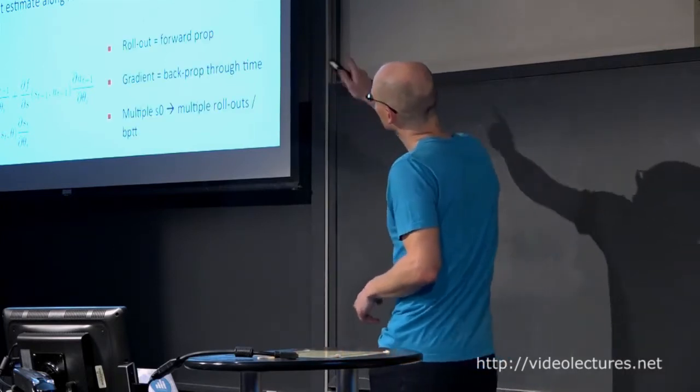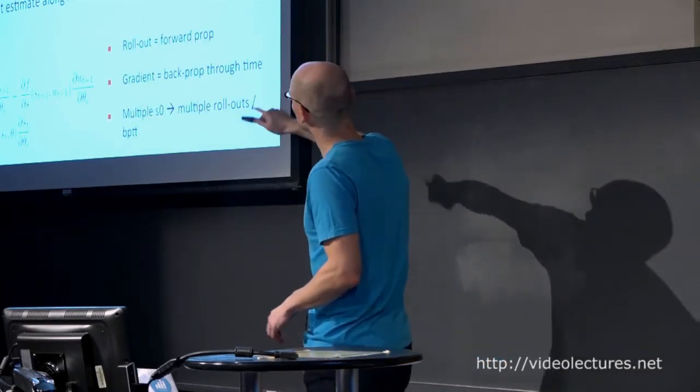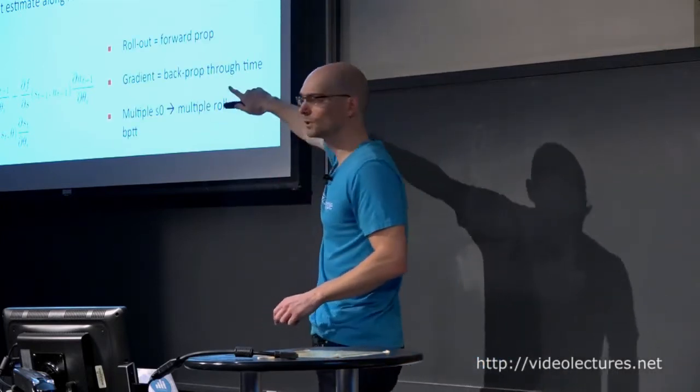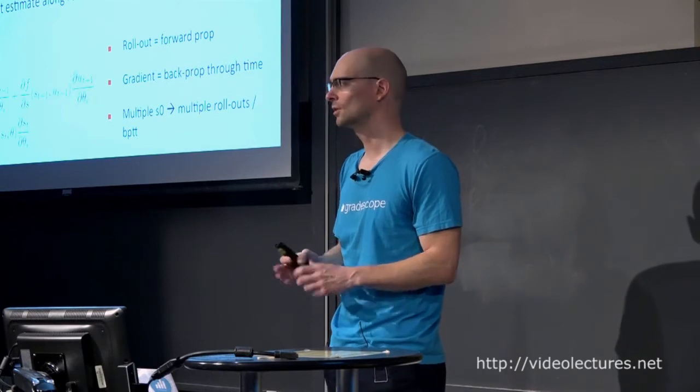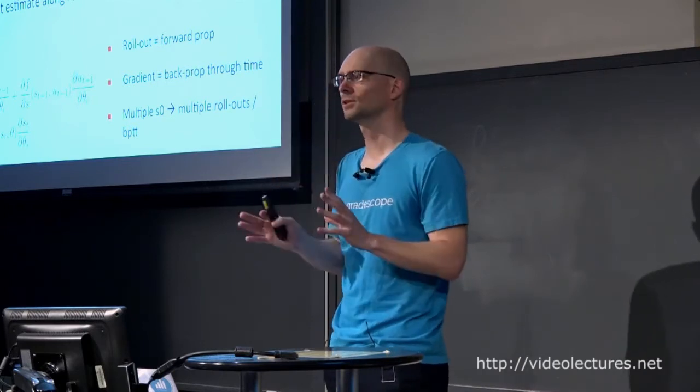To get policy gradients, we do a rollout — executing the policy — then do backprop, which gives us a gradient. We may do multiple rollouts and multiple initial states to get a lower variance gradient estimate, and then take updates. That gives us the simplest version of a policy gradient algorithm for deterministic dynamics and deterministic policy.